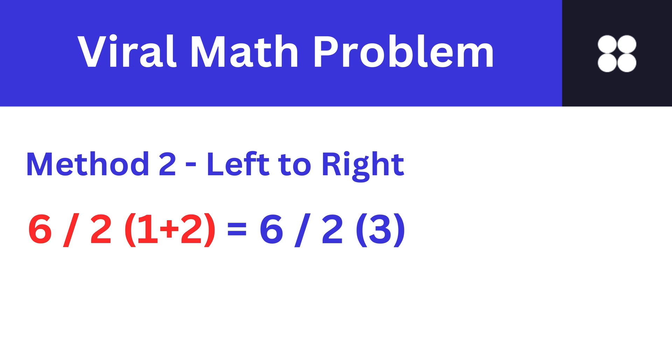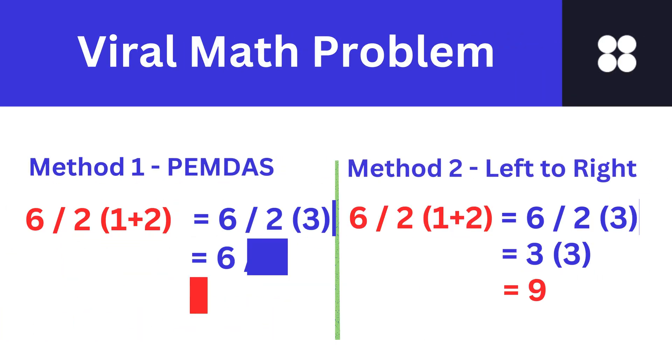Then we divide 6 by the number 2, giving us 3. The final step is multiplying the number 3 by 3, resulting in the answer 9. What do you think is the correct answer?